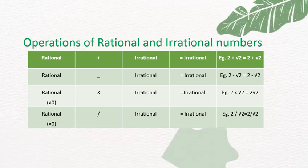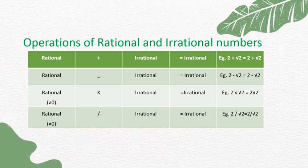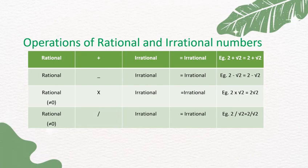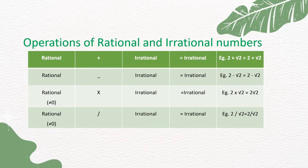A rational number multiplied by an irrational number (except 0) gives an irrational number. For example, 2 is rational and √2 is irrational; 2 × √2 = 2√2, which is an irrational number.